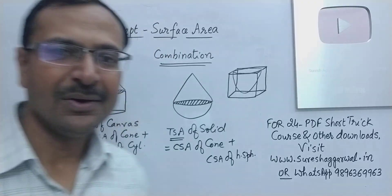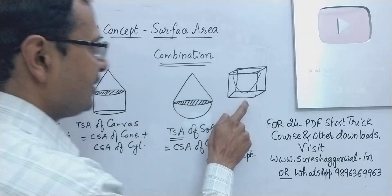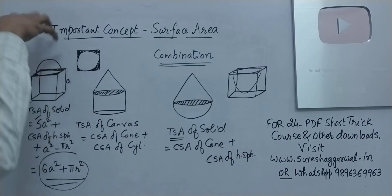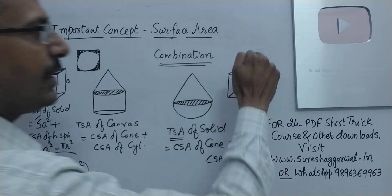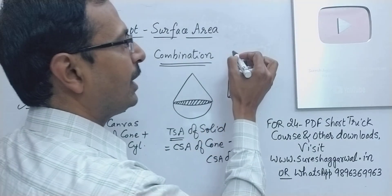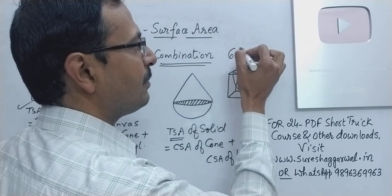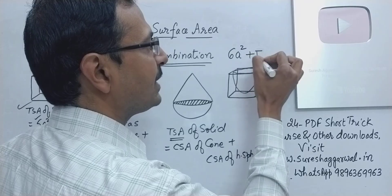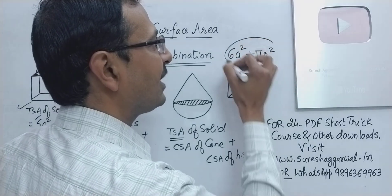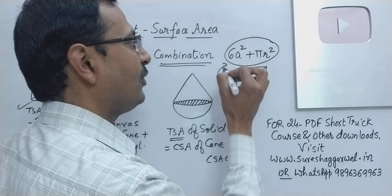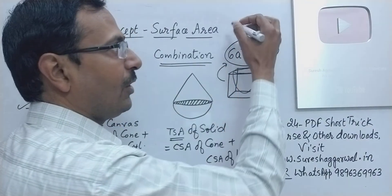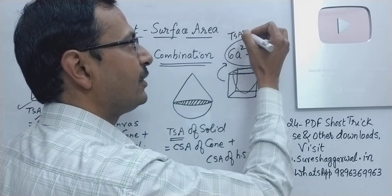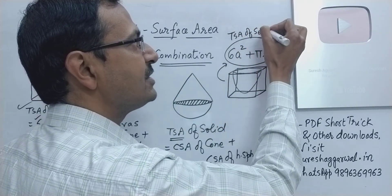Surprisingly, even for this solid, just as this solid, whether you place a hemisphere or cut out a hemisphere, the formula is going to remain the same, 6a square plus pi r square. That will again be the formula for total surface area of this solid, total surface area of solid which is left behind.